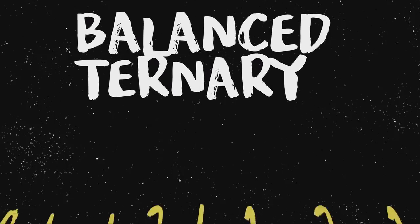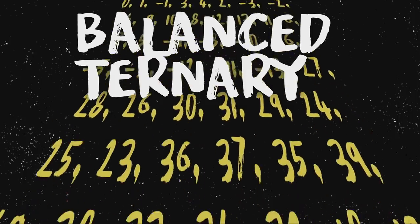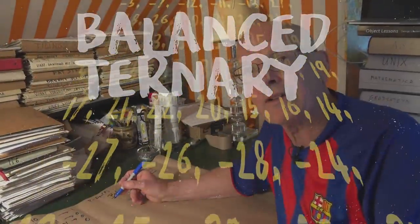This is called balanced ternary and what you do is you write your number in base three and then you replace all the twos by minus ones. So let's do it.